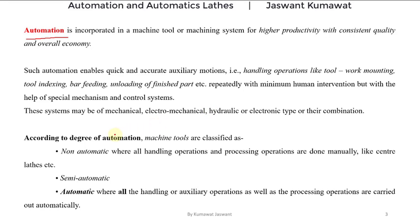The extent to which automation is incorporated in a machine tool — that is, according to degree of automation — machine tools are classified as non-automatic, semi-automatic, and automatic. Non-automatic machine tools are those where all handling operations as well as processing operations are done manually, whereas in automatic machine tools all operations are carried out automatically.